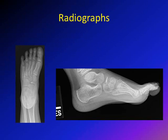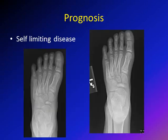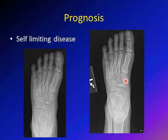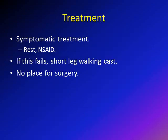Kohler's disease is a self-limiting disease. This is the same patient after about 16 months, and you can see the navicular bone is getting thicker and returning closer to normal when compared to the cuneiform or talus. Blood vessels come back and the bone regenerates.